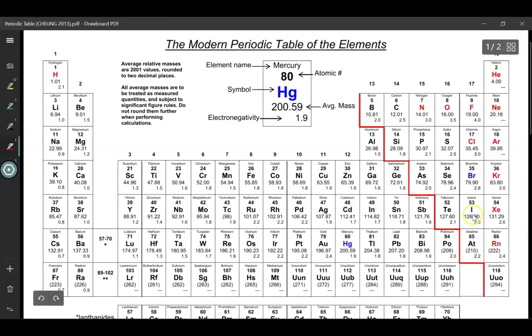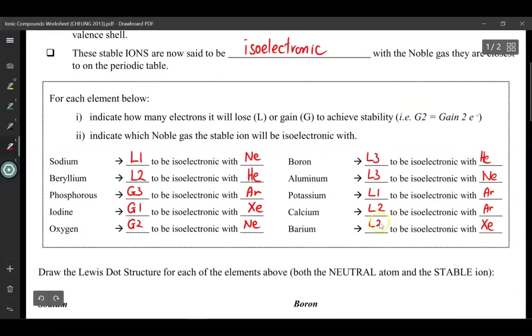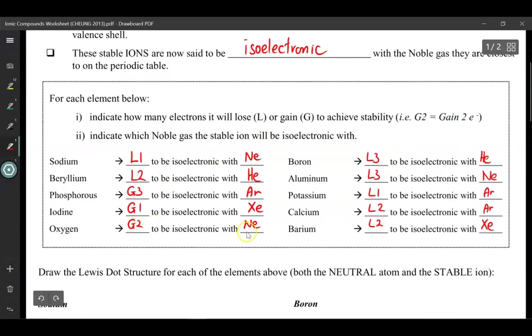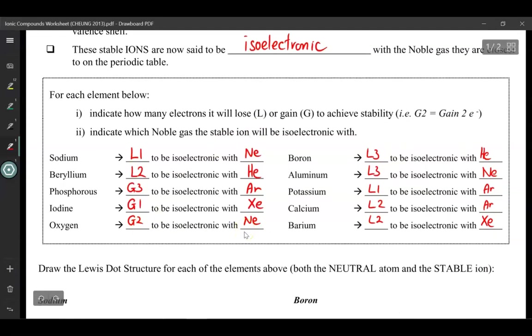Iodine, much easier to gain 1 to become xenon than to lose 7 in order to become krypton. So gain 1, turn it into xenon, while oxygen can gain 1, 2 to become neon, or lose 6 to become helium. So gain 2 to become neon. Alright, let's just move ahead now.